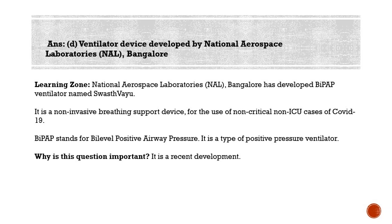For air to enter the lungs, a pressure gradient must exist between the airway and the alveoli. This can be accomplished either by raising the pressure at the airway (positive pressure ventilation) or by lowering the pressure at the level of the alveolus (negative pressure ventilation). Swastvayu is a positive pressure ventilator connected with an oxygen concentrator, ideal for treating moderate or mid-stage severe COVID-19 patients who do not require intubation and invasive ventilation. It is ideal for use in wards, makeshift hospitals, dispensaries, and homes.